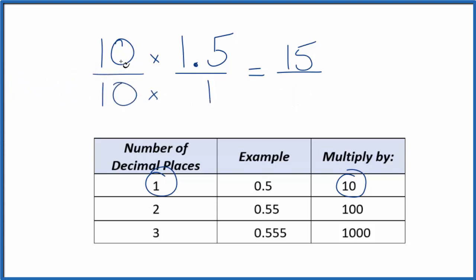So 10 over 10, that's just 10 divided by 10, it's just 1. So we're not changing anything again, we're just multiplying by 1. 10 times 1 is 10, and there's our fraction, 15 tenths.